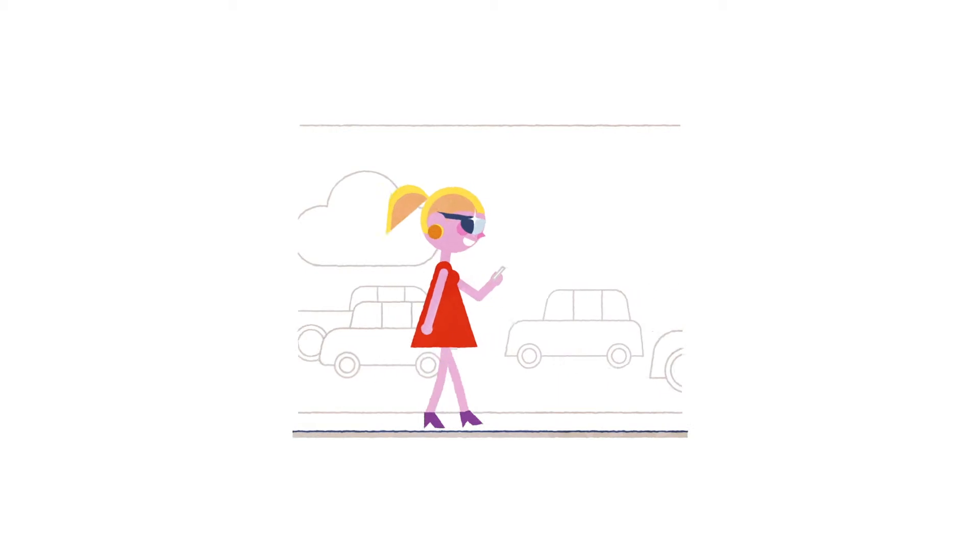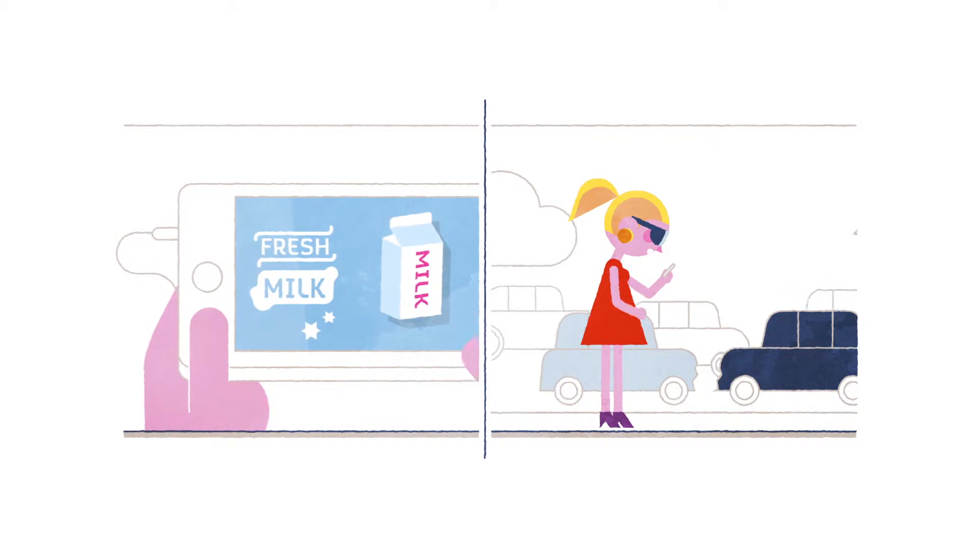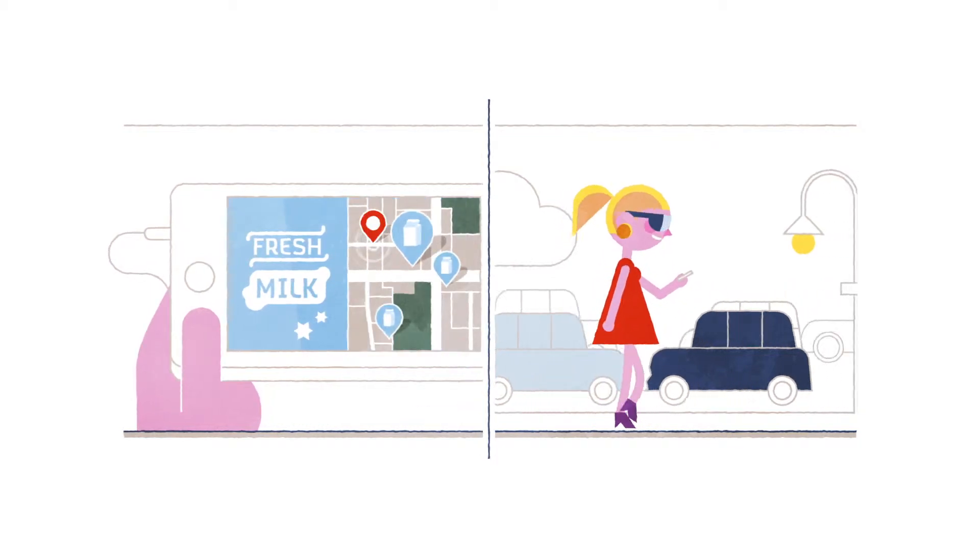Meanwhile, Sophie is out and about watching Made in Chelsea on her mobile. Again, our favourite milk carton makes an appearance. But this time, Sophie's shown where she can buy it from locally. Isn't that handy, Sophie?